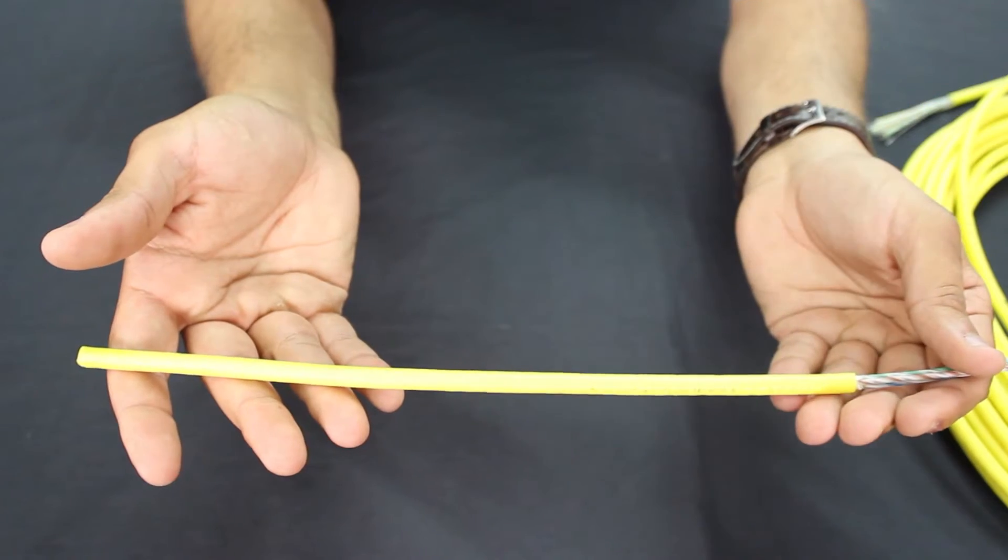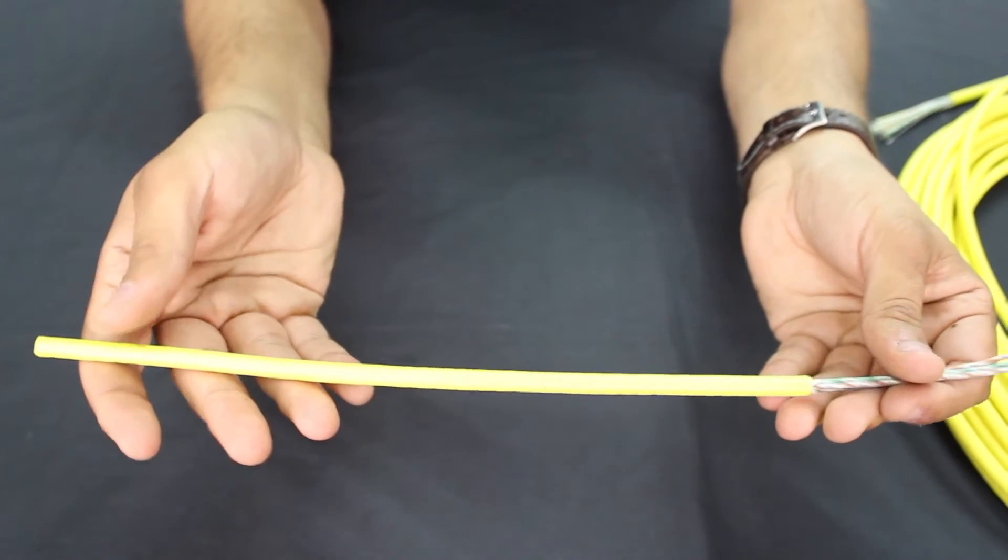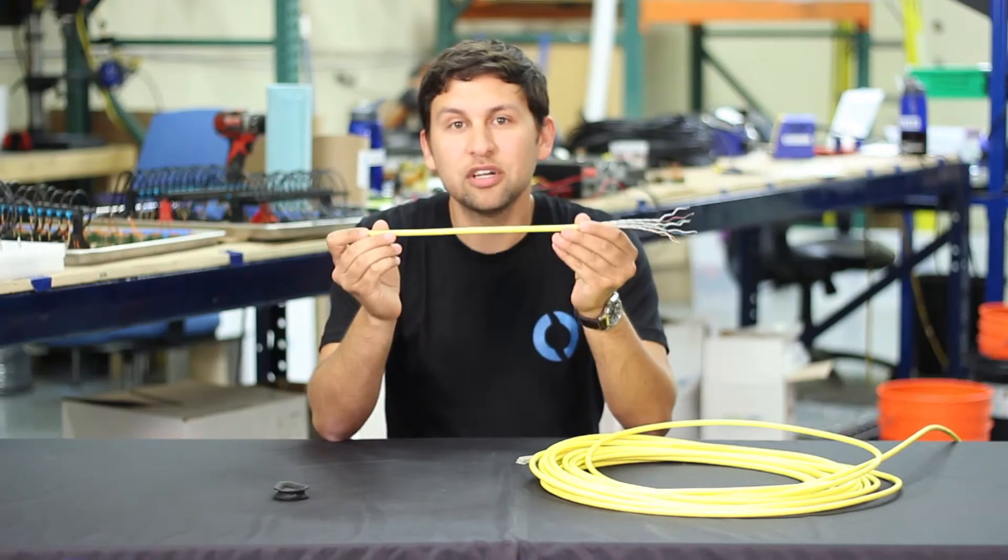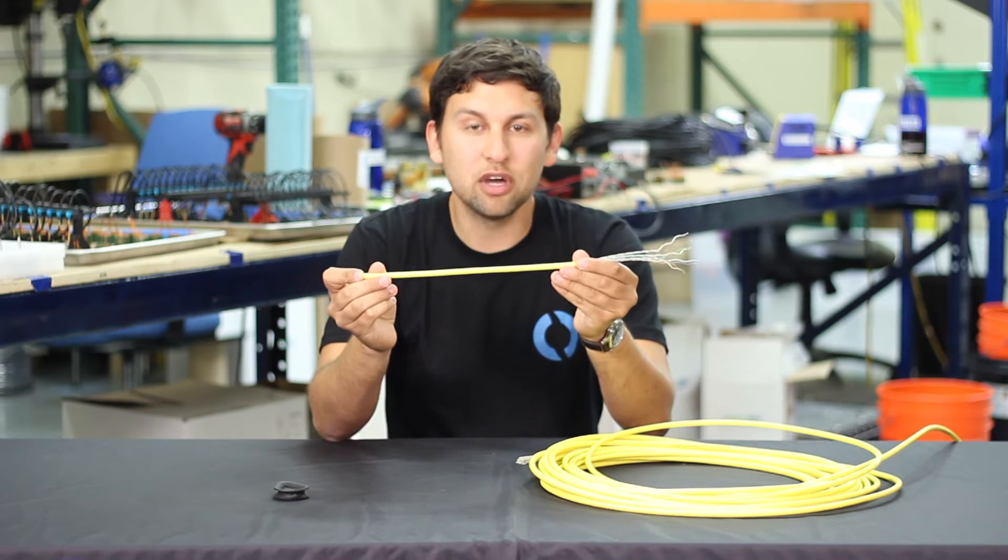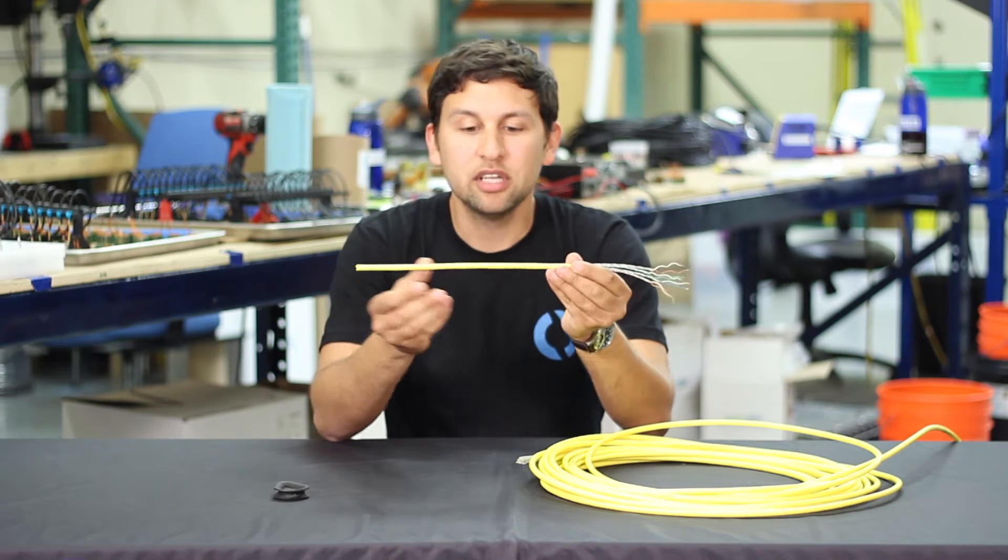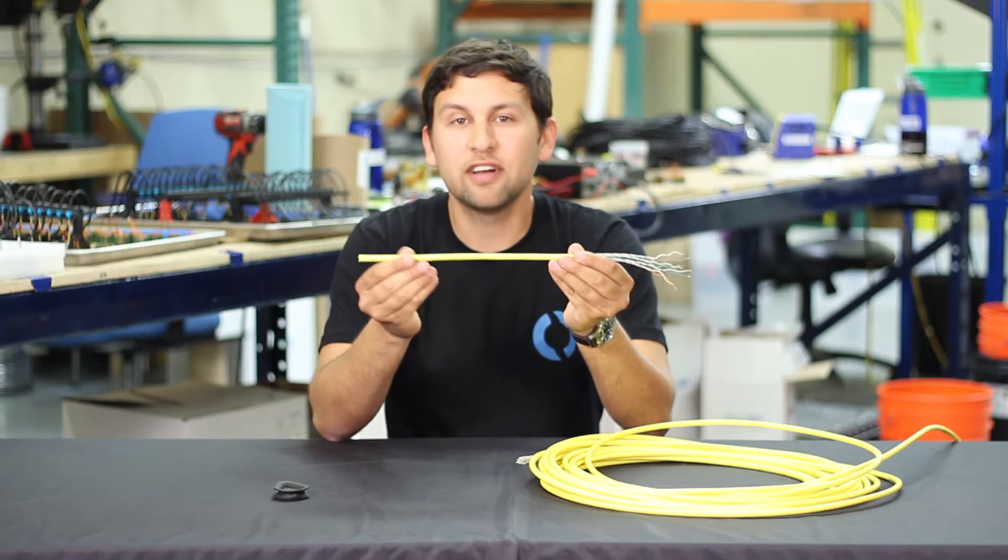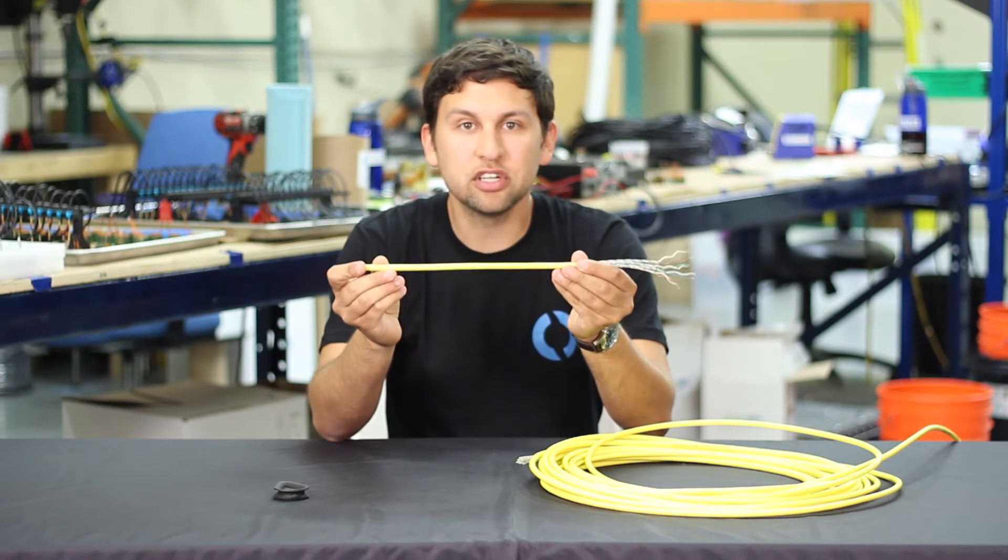On the outside is a polyethylene foam jacket that's abrasion-resistant and gives the tether neutral buoyancy in freshwater and slight positive buoyancy in seawater. The 7.6 millimeter outer diameter gives it a sleek drag profile and a size that's smaller than most ROV tethers.